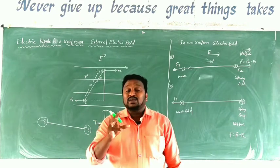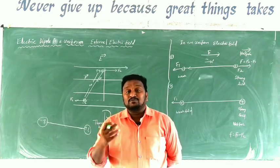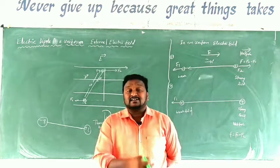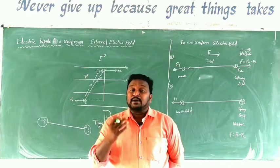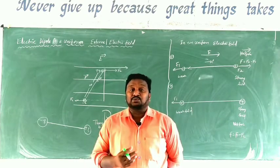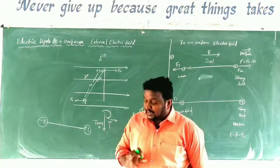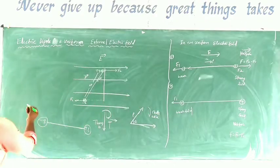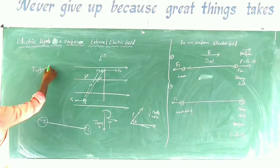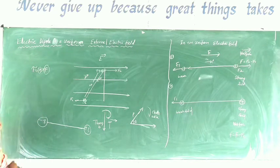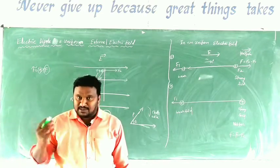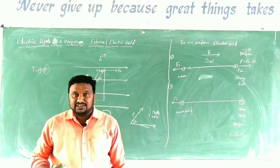Torque is the vector product of position vector and force: τ = r × F. Simply, torque is the product of perpendicular distance between two forces and the magnitude of one of those forces. It is a vector quantity.